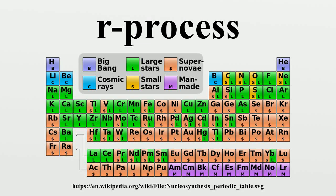The R process is a nucleosynthesis process that occurs in core-collapsed supernovae and is responsible for the creation of approximately half of the neutron-rich atomic nuclei heavier than iron. The process entails a succession of rapid neutron captures by heavy seed nuclei, typically 56Fe or other more neutron-rich heavy isotopes.